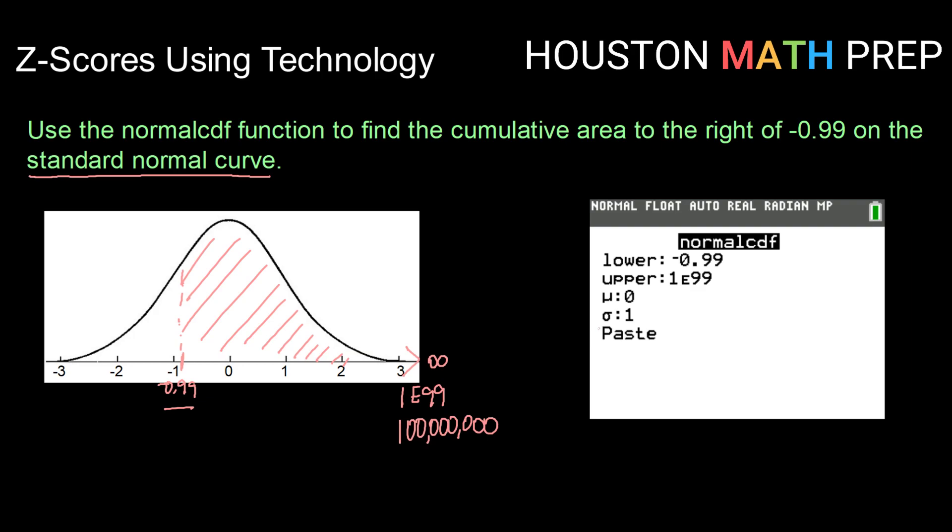Leaving my mean at 0 and my sigma at 1, pasting this together, I would get a value from normal CDF of negative 0.99, 1e99, 0, 1. That would give me 0.8389. We can say that about 83, almost 84% of our data values are above a z-score of negative 0.99.